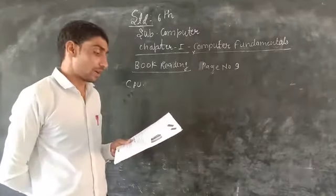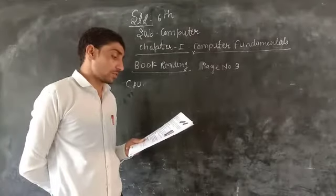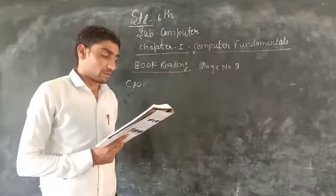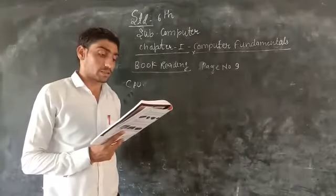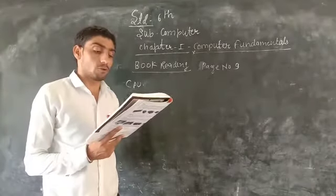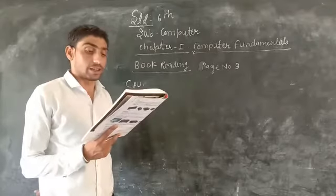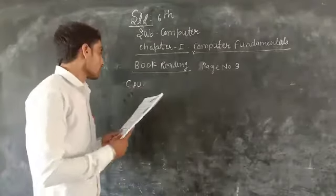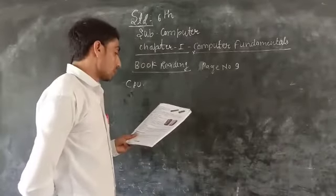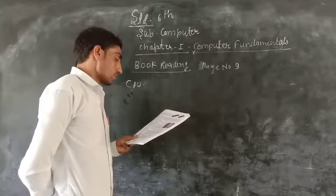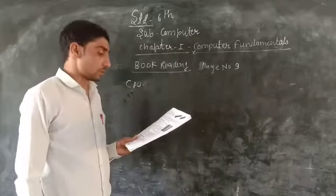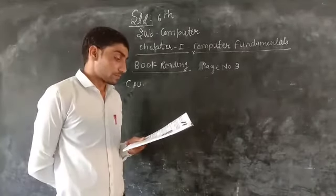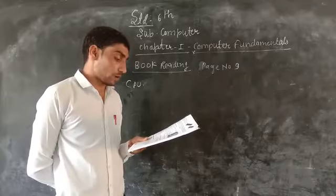According to the instructions, these instructions are available to the users. After the processing, it sends the results to an output device. It is also known as the brain of a computer. CPU consists of two components.